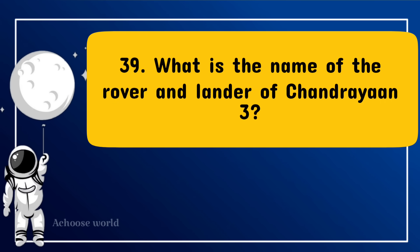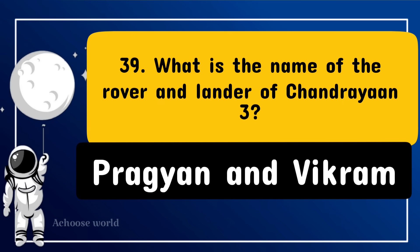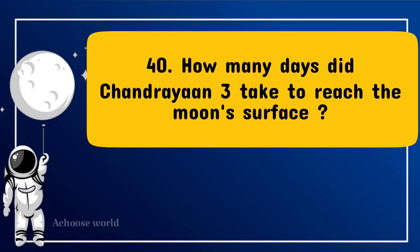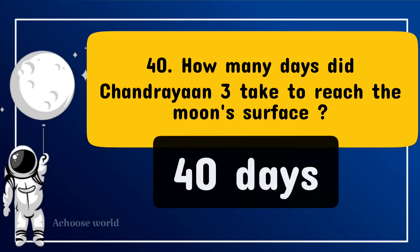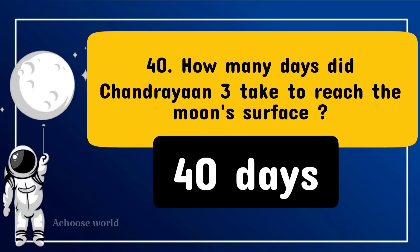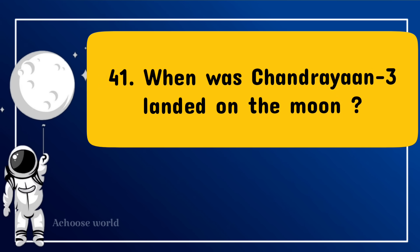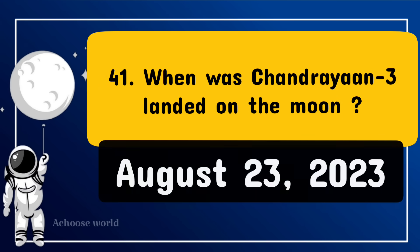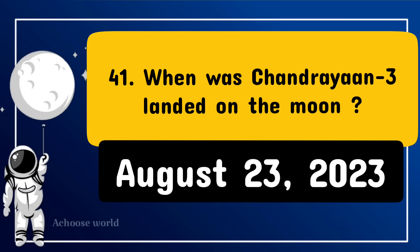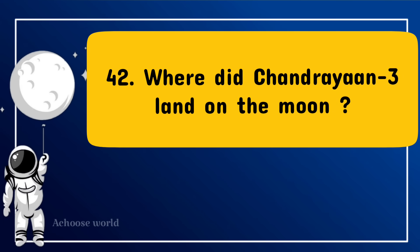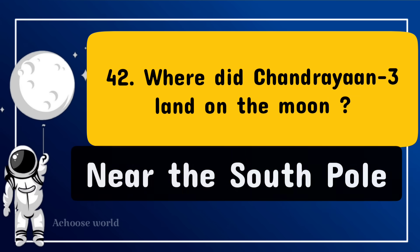What is the name of the rover and lander of Chandrayaan 3? Pragyan and Vikram. How many days did Chandrayaan 3 take to reach the Moon's surface? 40 days. When was Chandrayaan 3 landed on the Moon? August 23, 2023. Where did Chandrayaan 3 land on the Moon? Near the South Pole.